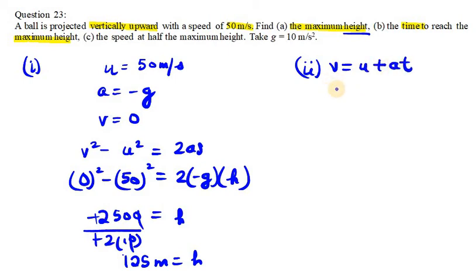So v is 0 and u is 50. a is minus 10, then we have t.